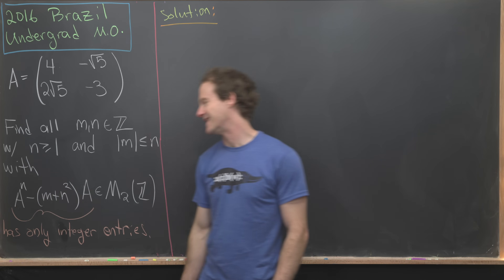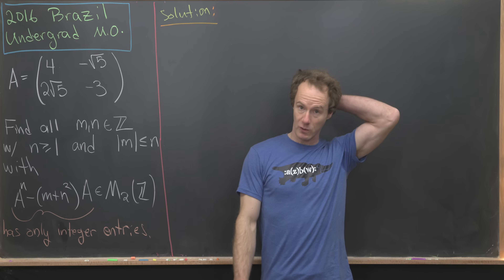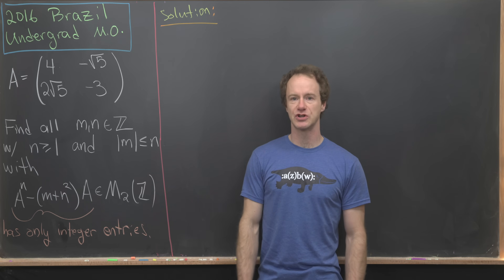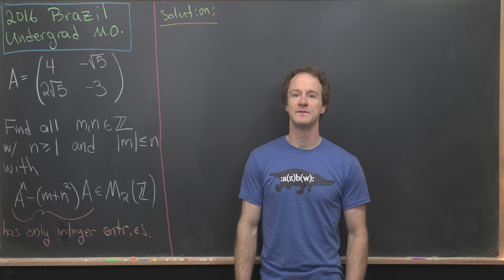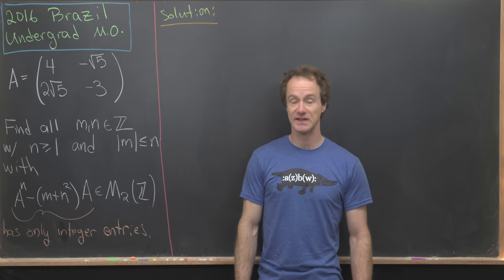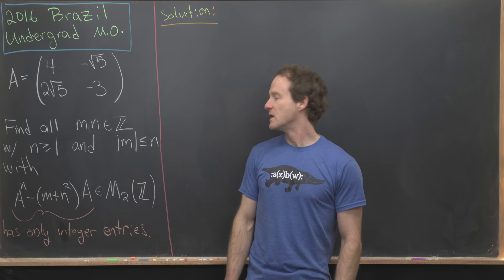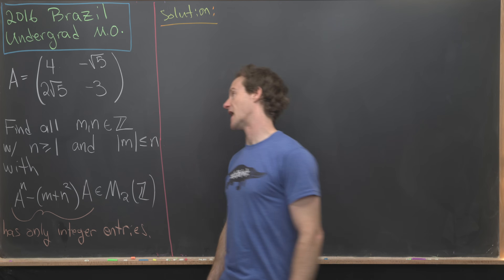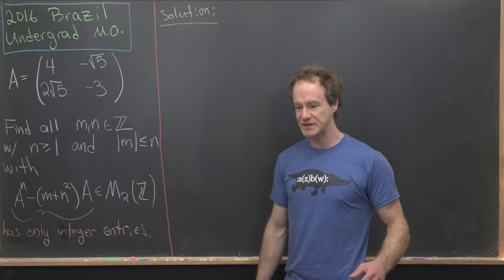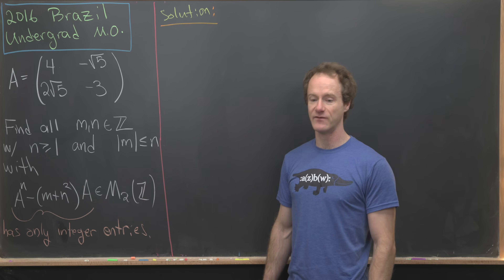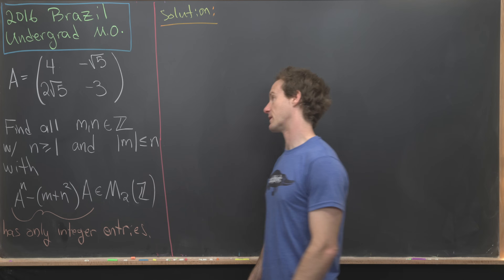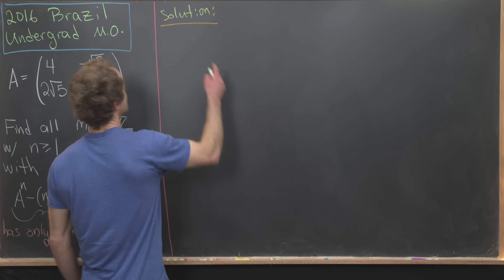We want to zero in on finding the nth power of A. The way to find an arbitrary power of a matrix is to diagonalize it, if it is diagonalizable. This matrix is indeed diagonalizable, so we need to find the eigenvalues, then the eigenvectors, and then proceed algorithmically.